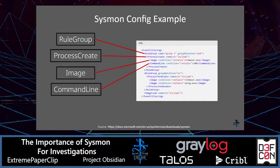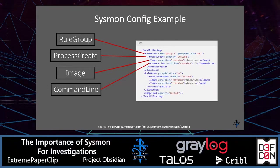Here's a little example of the Sysmon config XML. A rule group is a simple way to group rules for a specific event ID. Note the group relation — in this case it uses 'and' to define how the rules are applied; an alternative would be 'or'. Process create corresponds to Event ID 1. A rule can match on 'include image' — the executable, in this case timeout.exe — and the command line field can be filtered to match content, for example where it simply contains '100'.